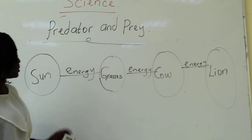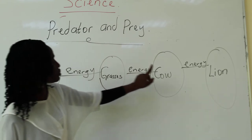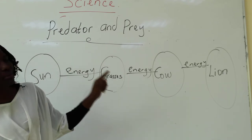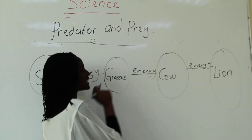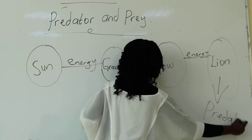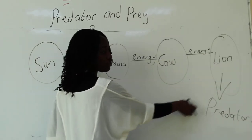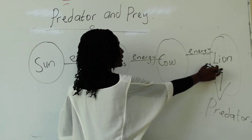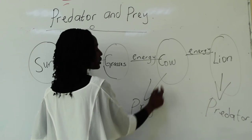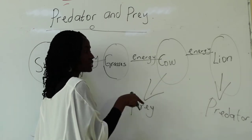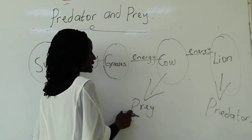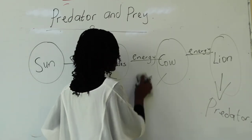So we have the sun, the grass, the cow, and the lion. If you look at this food chain, you'll see that one animal eats another animal. The lion eats the cow — so the lion is the predator, because the lion eats another animal. And the cow is the prey, because the cow is the animal being caught and eaten.